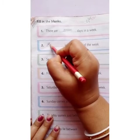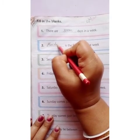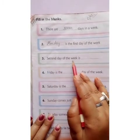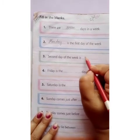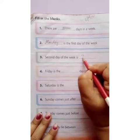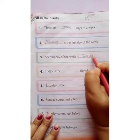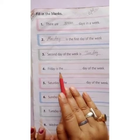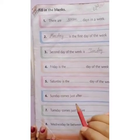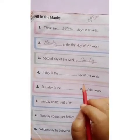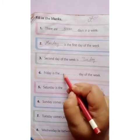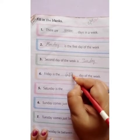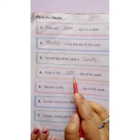Number three: the second day of the week is — yes, it's Tuesday — t-u-e-s-d-a-y, Tuesday. Number four: Friday is the dash day of the week. What is the position of Friday? Yes, it's the fifth — f-i-f-t-h, fifth. Friday is the fifth day of the week.